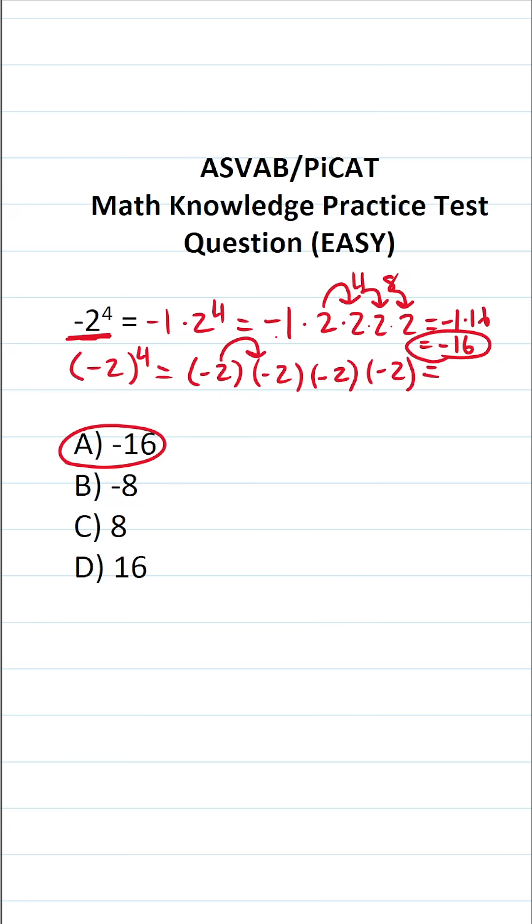We have negative 2 times negative 2 which is positive 4. Positive 4 times negative 2 is negative 8. Negative 8 times negative 2 is going to be positive 16, because a negative times a negative is a positive.